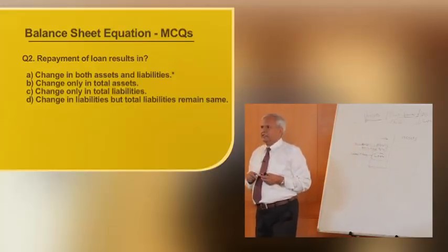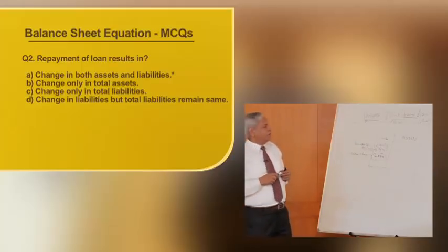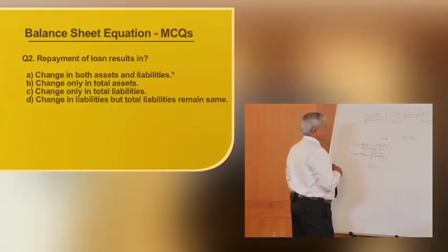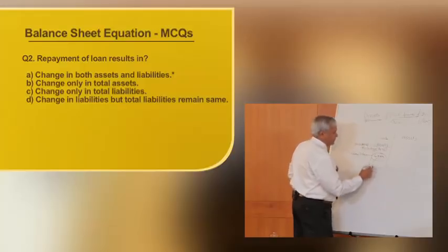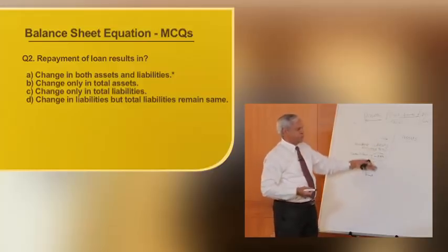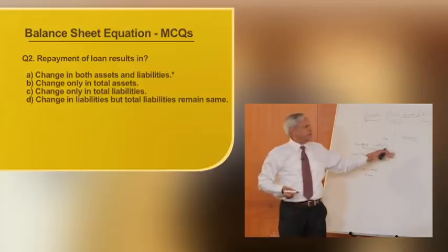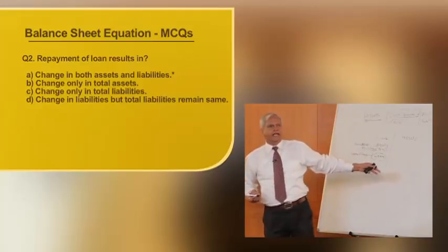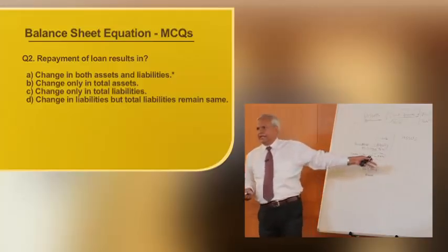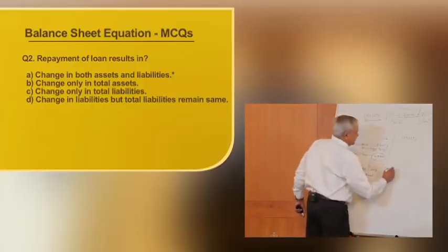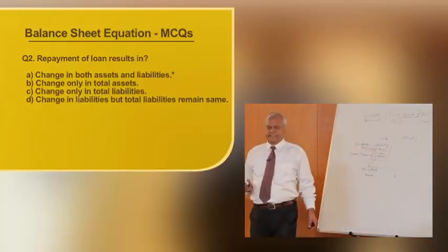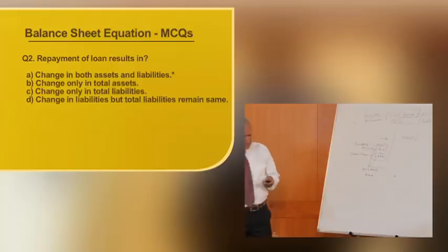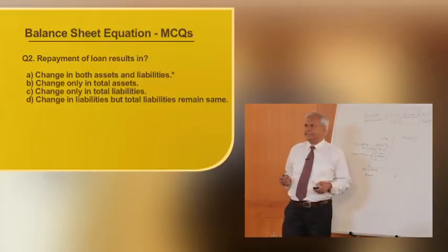The second question pertains to: repayment of a loan results in what? When a loan is repaid, assets also come down. Both assets and liabilities are reduced — for example, by rupees 2 lakhs. Both assets and liabilities are reduced by rupees 2 lakhs. That is the impact of this particular transaction and that is the correct answer.